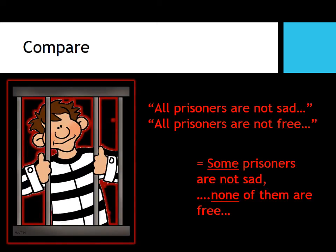For example, 'all prisoners are not sad' and 'all prisoners are not free' both have the form 'all are not.' But in the first case, 'all prisoners are not sad' just means some prisoners are not sad. In the second case, 'all prisoners are not free' means all prisoners lack the property of freedom — none of them are free. Notice that this form does not have the crystal clarity of the four standard form propositions.